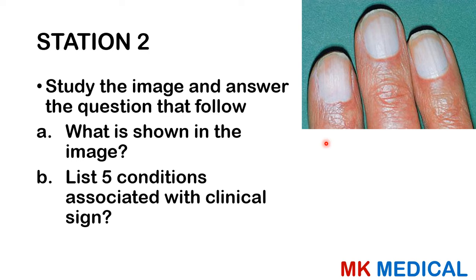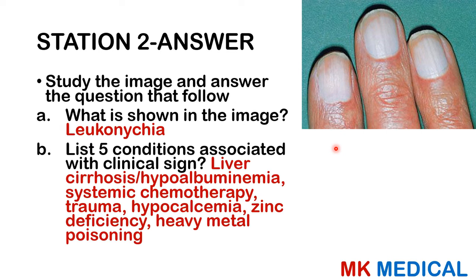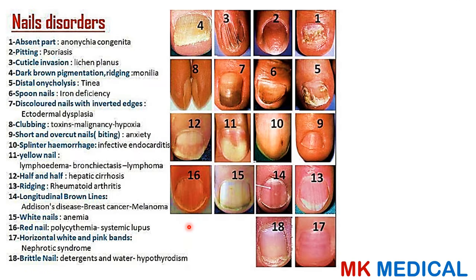Moving on to station two: study the image and answer the questions that follow. What is shown in the image? List five conditions associated with the clinical sign. Here comes the answer: this is whitening of the nails, referred to as leuconychia. It's seen in liver cirrhosis, hypoalbuminemia, patients on systemic chemotherapy, patients with trauma, hypocalcemia, zinc deficiency, and sometimes heavy metal poisoning.